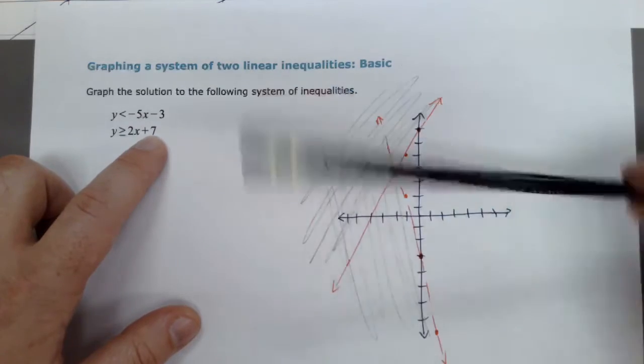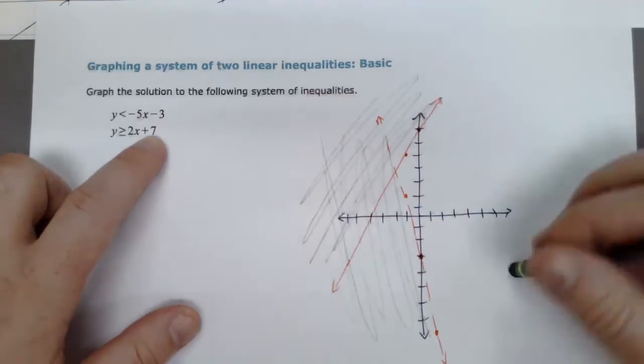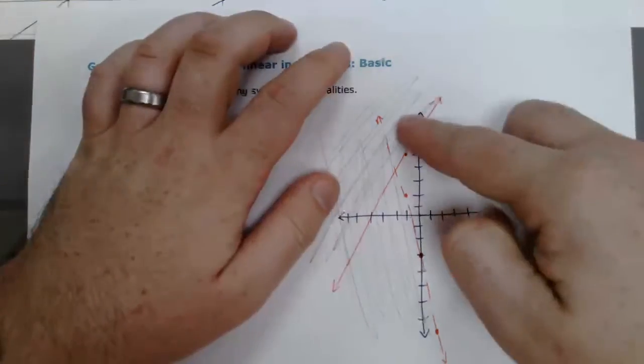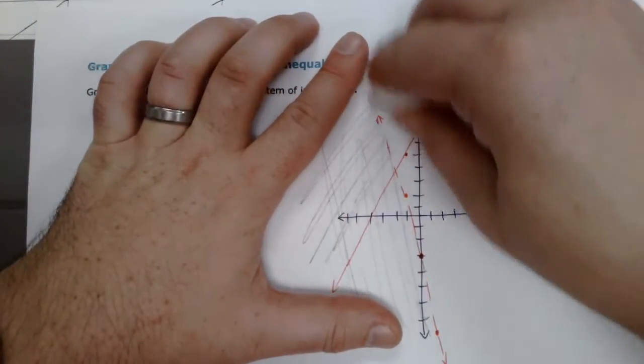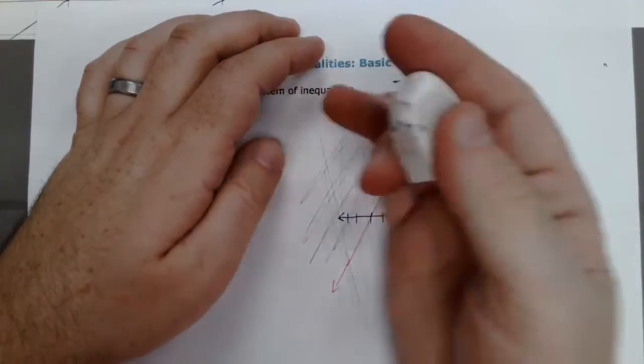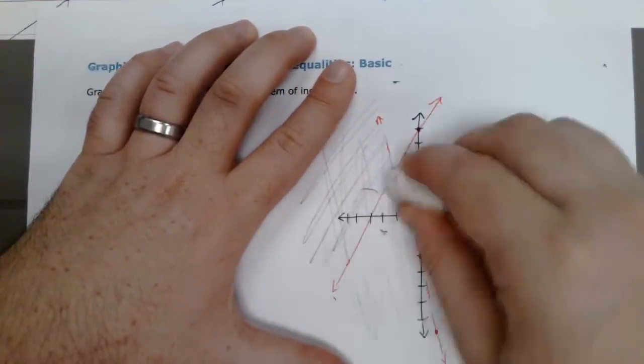So, here I shaded down, here I shaded up, and my goal is to only have this shaded region that is shaded for both lines. So, this one is not true, and then this one is only shaded from this line, so I lose that part as well.